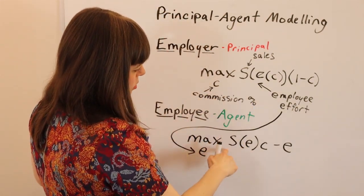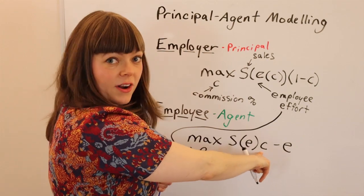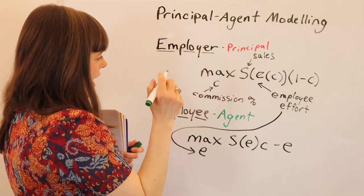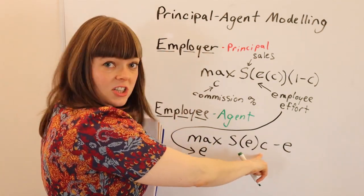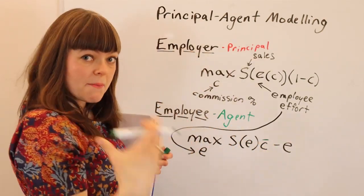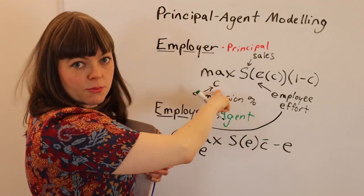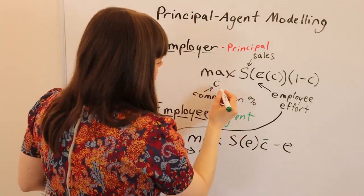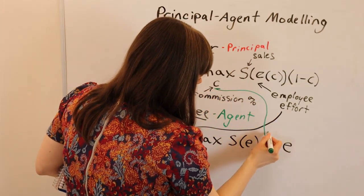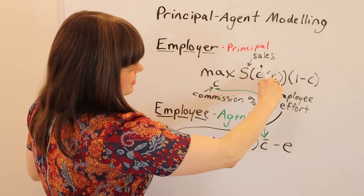Sales and effort appear in both problems. Crucially, the commission rate C is exogenous to the employee — we can put a bar over it to emphasize that — but it's the choice variable of the principal. That is one key feature of principal-agent models: the principal's choice variable appears inside the agent's problem as an exogenous variable.